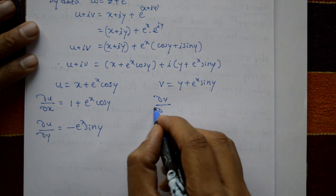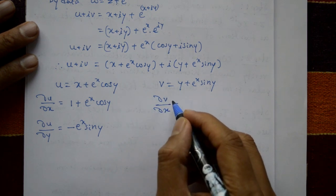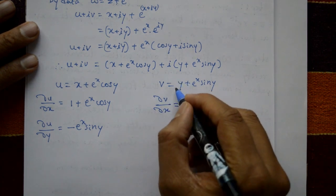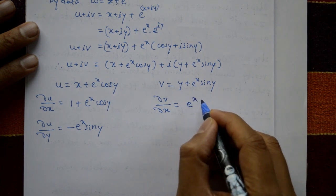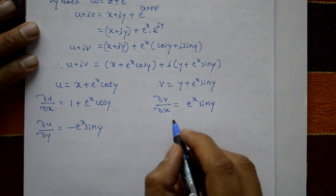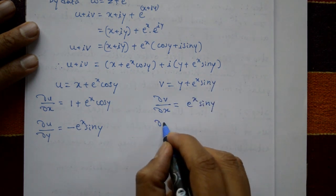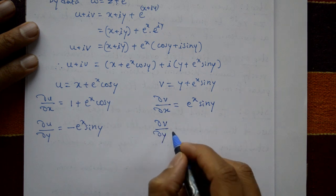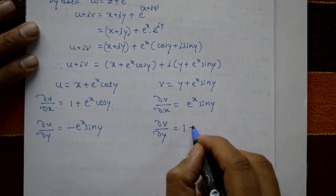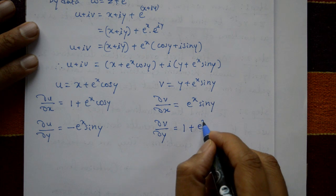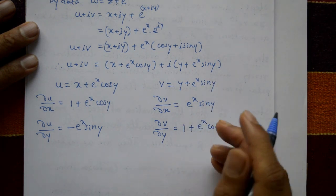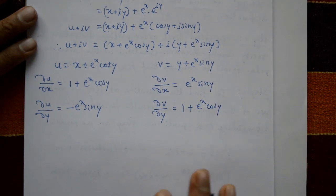Now differentiate v with respect to x and y partially. ∂v/∂x = e^x sin y, since y is constant. And ∂v/∂y = 1 + e^x cos y, since e^x is constant and sin y differentiates to cos y.